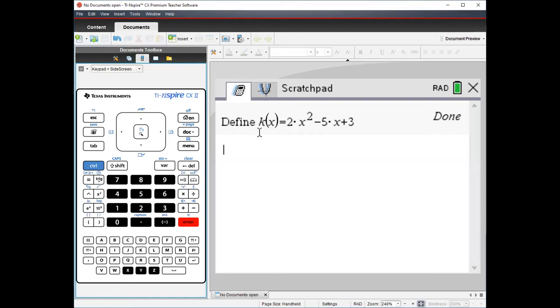What I can do to evaluate k(-3) is just put in k(-3) and press enter, like it says on the page, and it tells me automatically that equals 36.